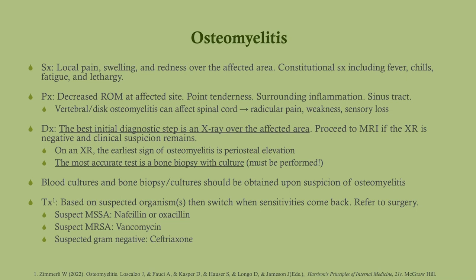The best initial diagnostic step when you suspect osteomyelitis is to get an x-ray — it's cheap, low dose of radiation, and if the osteomyelitis has gone on long enough you may detect it and forego CT or MRI. However, a negative x-ray does not rule out osteomyelitis, at which point you proceed to MRI — the best next step after x-ray. If a patient can't tolerate an MRI, such as those with prosthetic parts, then you get a CT.